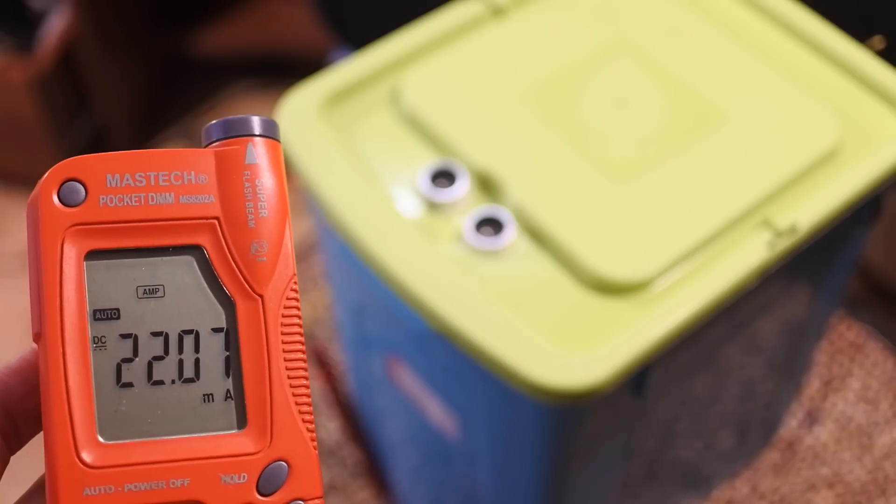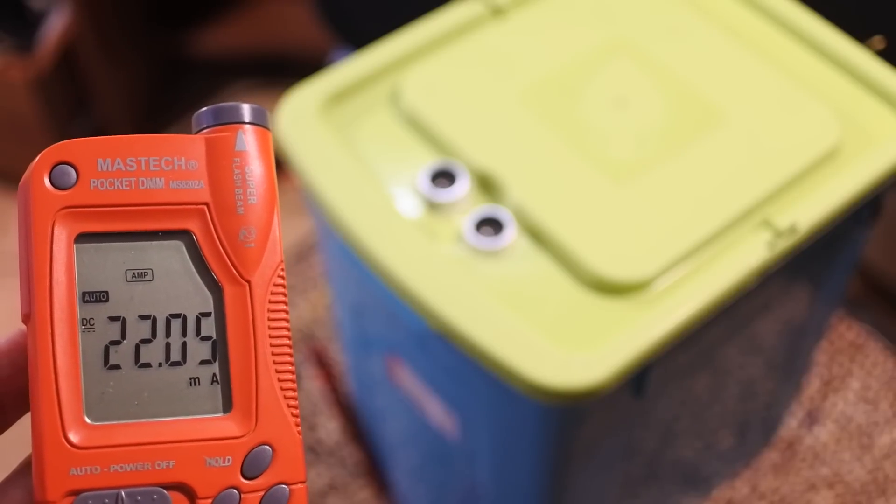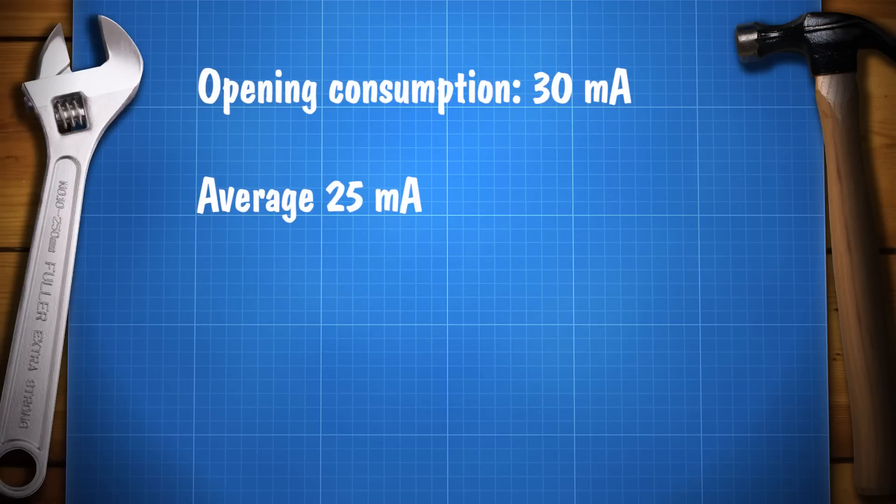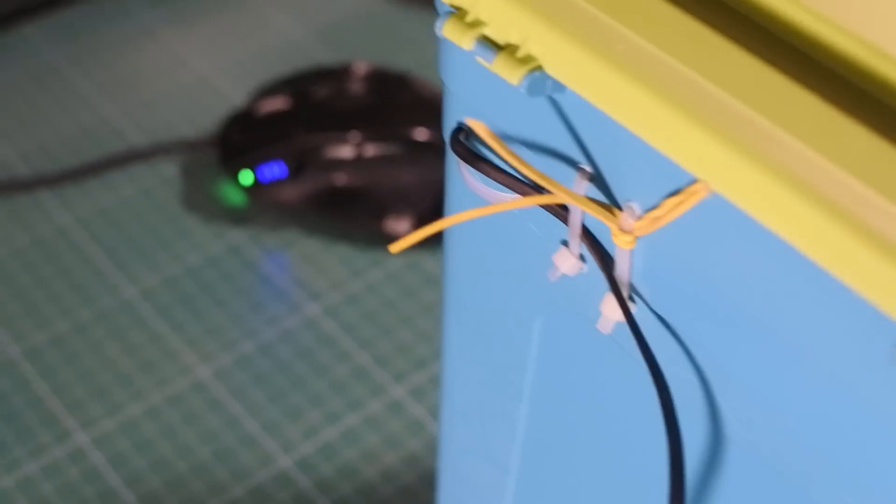Also there is a problem with power, because Arduino consumes 20mA. It's so much. A 50Ah power bank can power this trash can only for a week. So it's a good idea to use a tiny ATtiny13 or another microcontroller instead of Arduino. Or you can power the system by a DC power supply.